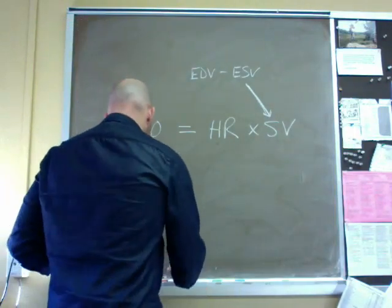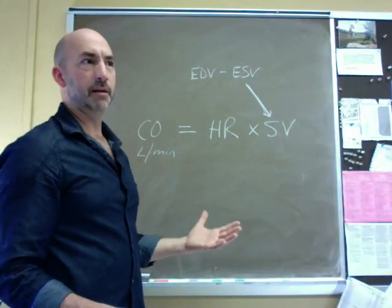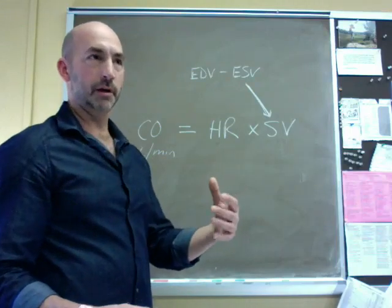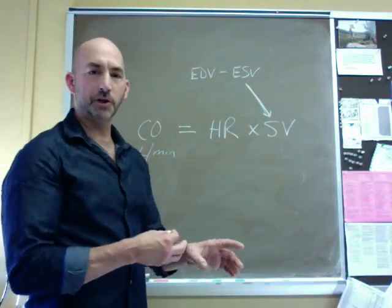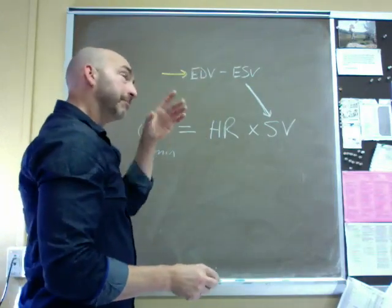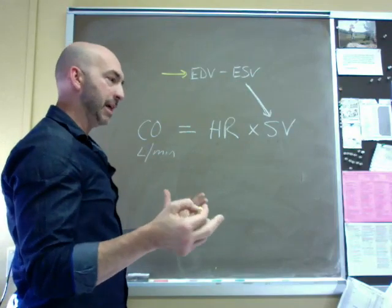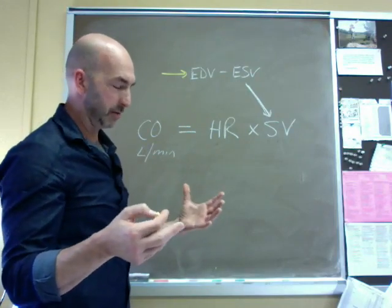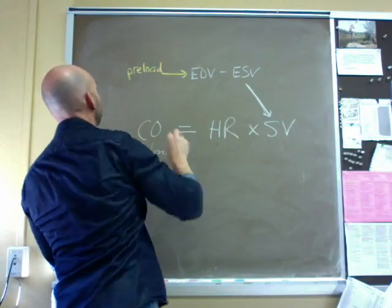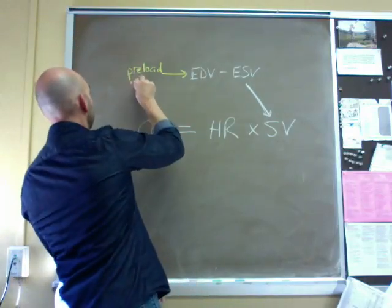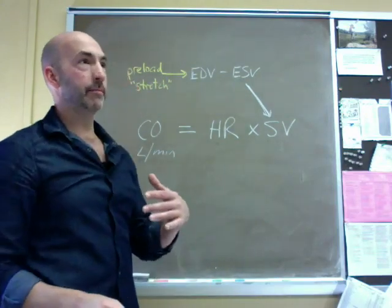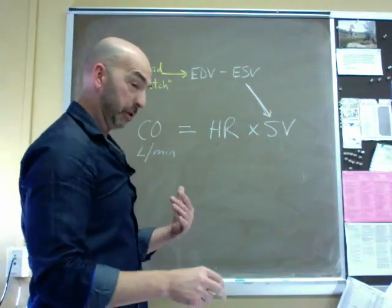Now EDV, you want to think of essentially, so end-diastolic volume, it's the volume that the ventricles fill with prior to their contraction and ejection. And so we describe the load on them, the amount of distension of those chambers, the ventricles, as preload. Meaning it's the load, the stretch, before on the cardiomyocytes before they contract, before they're stimulated to contract.